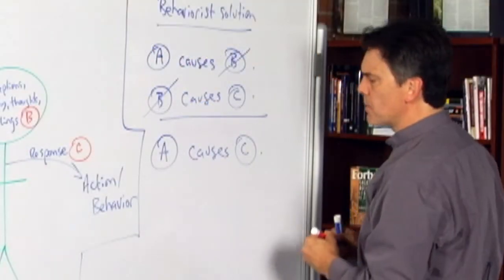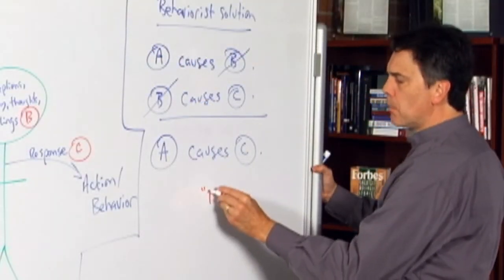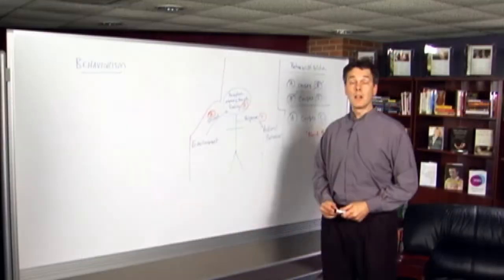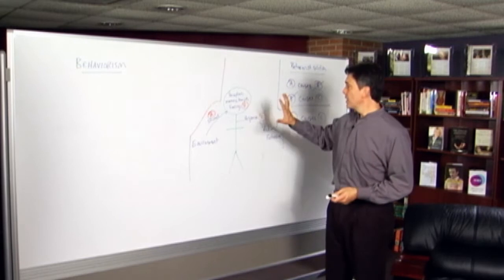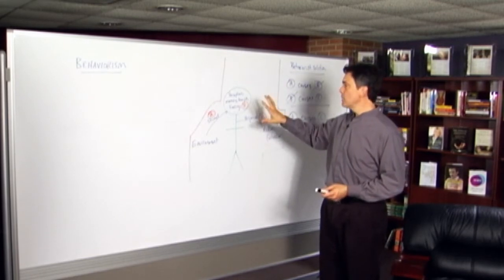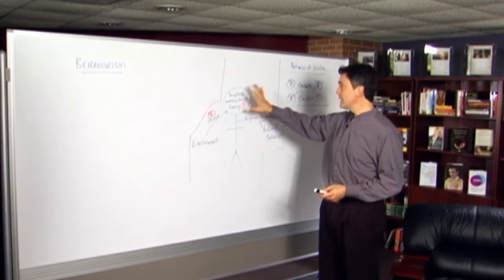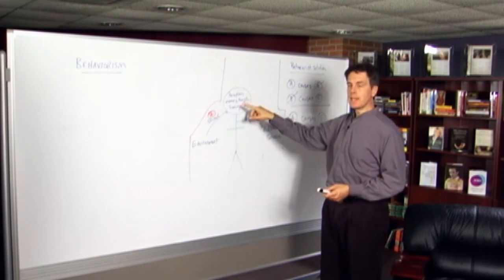Now this is what we can sometimes call a black box model. So methodologically, what we're going to do now as behaviorists is study the human being, the human psyche, but not make any direct reference to anything that's going on here in B.